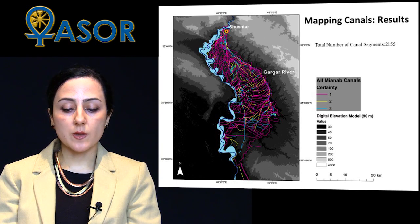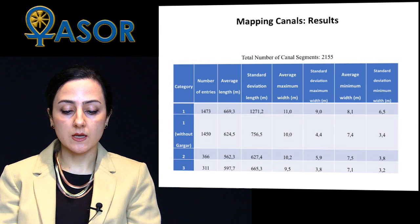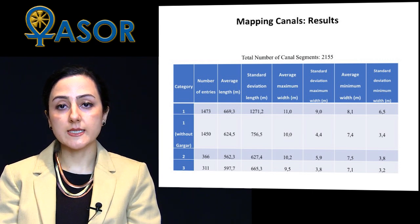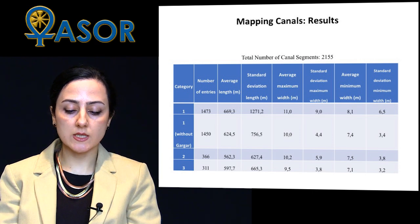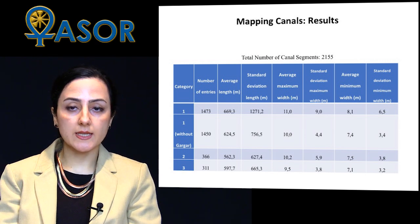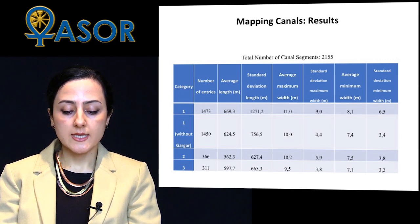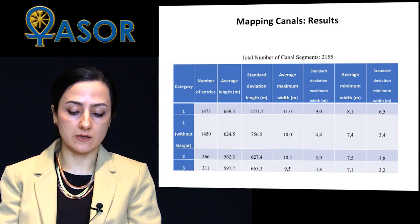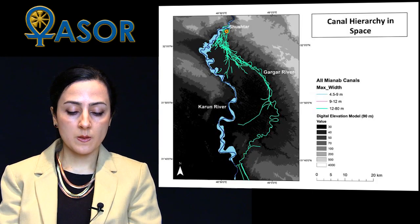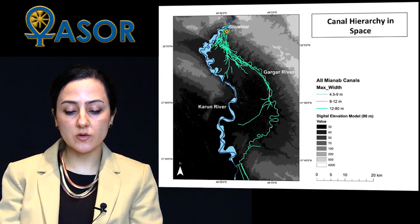Here you see the results of the mapping over the entire landscape. The table shows the basic statistics of the canal survey. Category 1, the canals with high certainty, seem to represent a wider array of canal lengths and widths than the other two categories, as expressed in the higher standard deviations. However, based on our assumption that the Gargar River was a phenomenon developed later than the period we are interested in, the statistics were also run excluding all segments of the Gargar River, and the difference became much less significant.